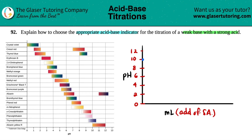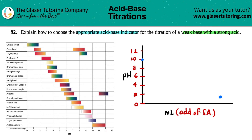As you add more and more strong acid, the resulting pH gets lower. At some point the strong acid will predominate and no weak base will remain. However, adding a little strong acid at first doesn't change the pH much, because you form a buffer solution — and in a buffer, the pH doesn't really change. So for a while the pH stays very similar, dipping only a little.